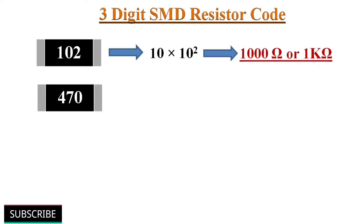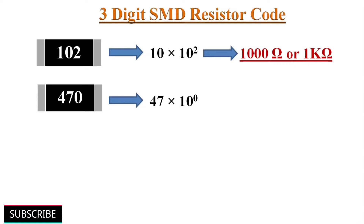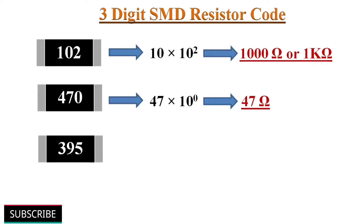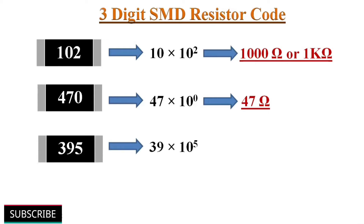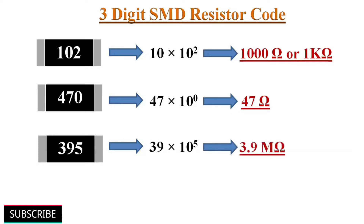Similarly, if the code is 470, then the resistance value is 47 multiplied by 10 to the power of 0, which equals 47 ohms. And likewise, if the code is 395, then the resistance value is 39 multiplied by 10 to the power of 5, which equals 3.9 mega ohms.